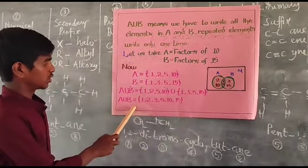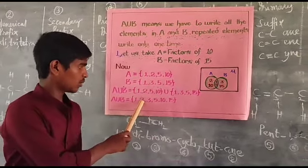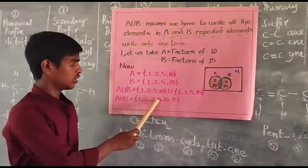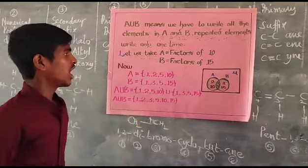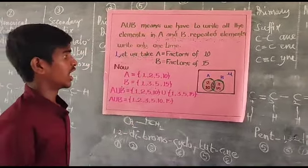A Union B is equal to 1, 2, 3, 5, 10, 15. I will show this in Venn Diagram.